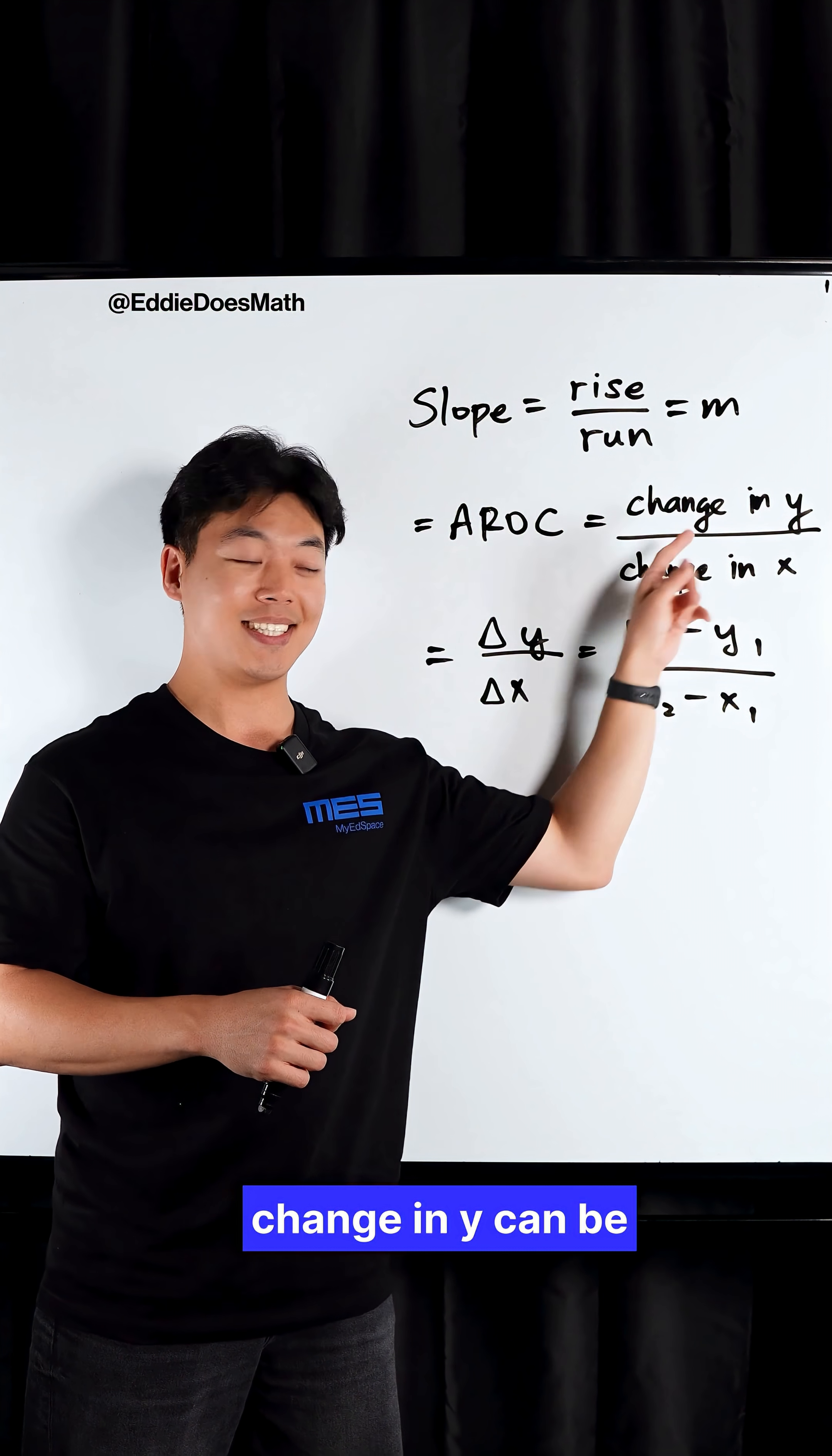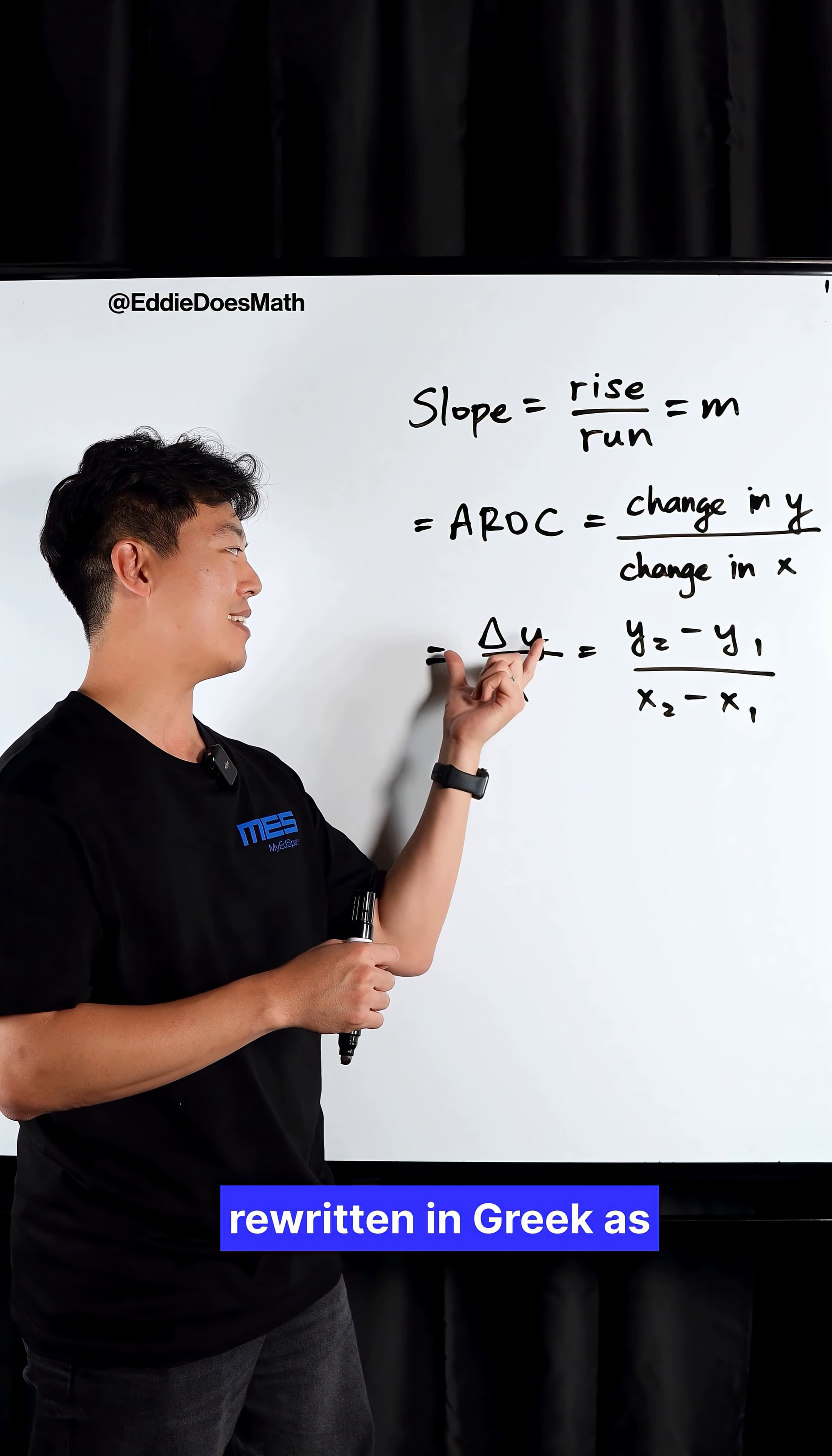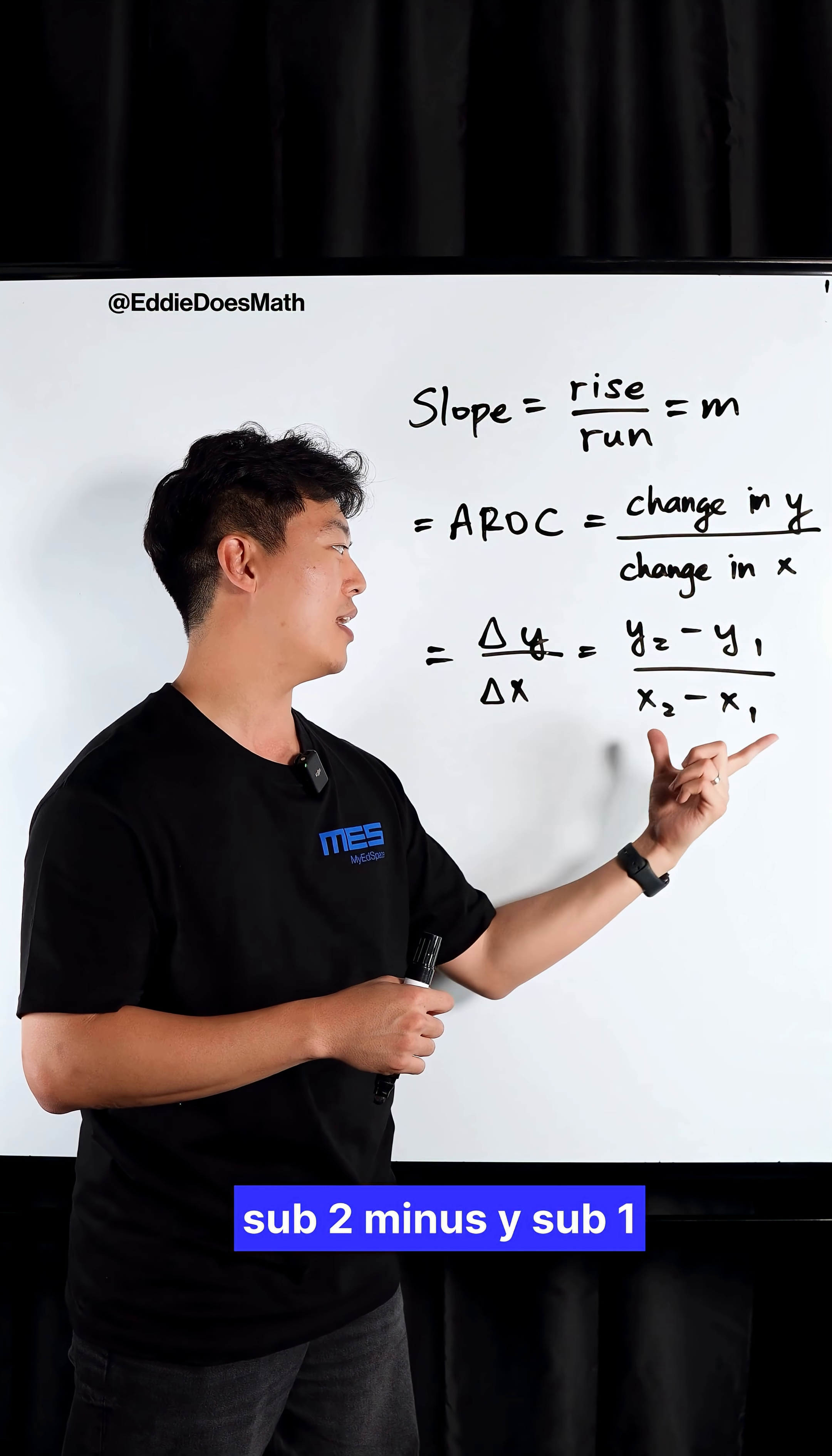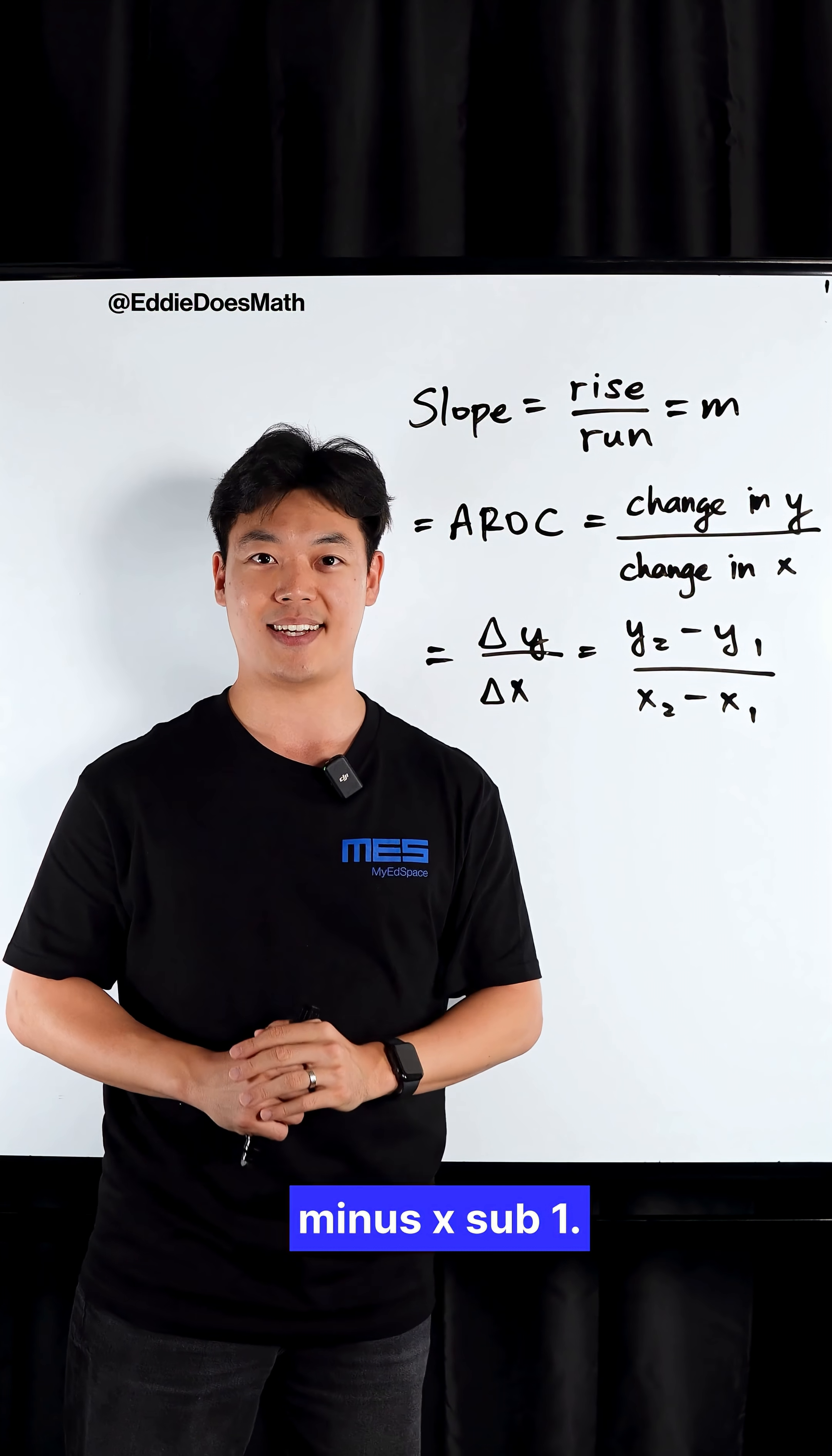The change in Y over change in X can be rewritten in Greek as delta Y over delta X, which is equal to Y sub 2 minus Y sub 1 all over X sub 2 minus X sub 1.